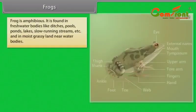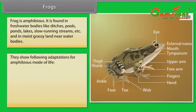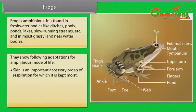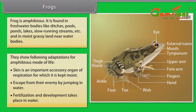Frogs: The frog is amphibious, found in freshwater bodies like ditches, pools, ponds, lakes and slow running streams, and in moist grassy land near water bodies. Frogs show adaptations for an amphibious mode of life. Skin is an important accessory organ of respiration and is kept moist. Frogs escape from enemies by jumping into water. Fertilization and development take place in water.